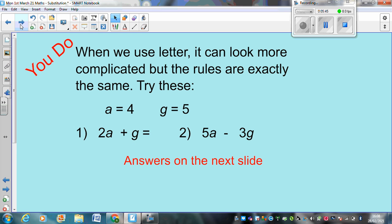So, when we use a letter, it can look more complicated. But the rules are exactly the same. So, you might see there, question one, 2A plus G. That looks like really complicated maths, doesn't it? But try these anyway. A equals 4 and G equals 5. So, I want two lots of A plus G and five lots of A. Take away three lots of G. Pause now and have a go at these questions. Remember, A is 4, G equals 5.